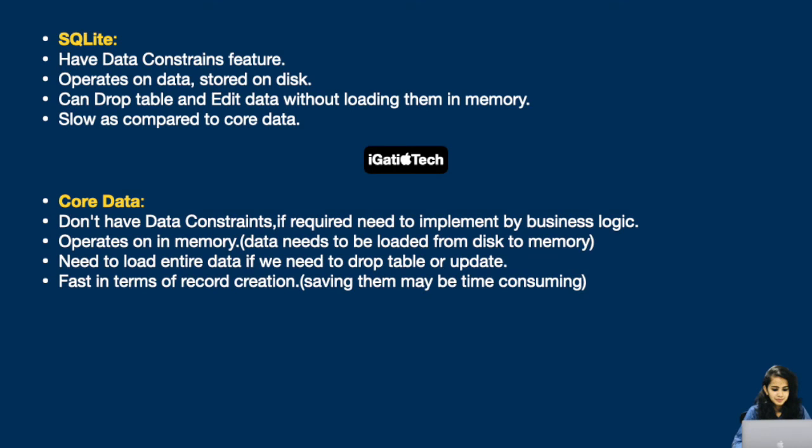Some important differences: SQLite has data constraints, operates on data stored on disk, can drop tables and edit data without loading them into memory, and is slower compared to Core Data. Core Data does not have data constraints — if required, they need to be implemented via business logic. Core Data operates in-memory, so data needs to be loaded from disk to memory. You need to load entire data to drop a table or update. Core Data is fast in terms of record creation, but saving may be time-consuming.